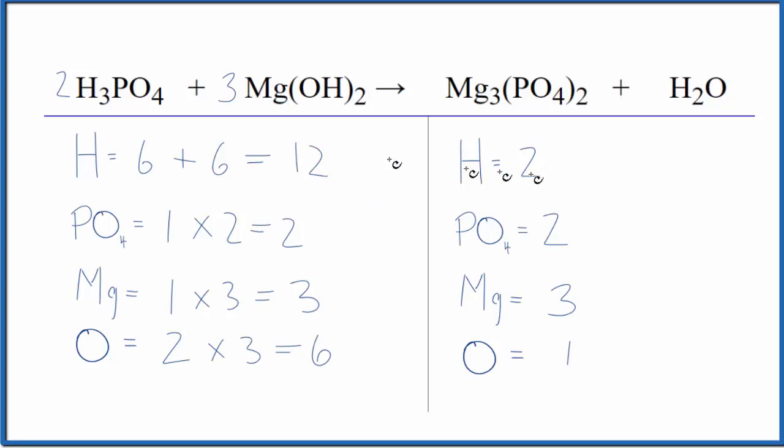So what's left to balance are the hydrogens and the oxygens. We left those until last. If I put a six here in front of the hydrogen, two times six, that would give me twelve. So now those are balanced, and the oxygens, one times six, that gives me six. So those are balanced, and now this equation is balanced.